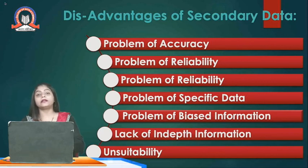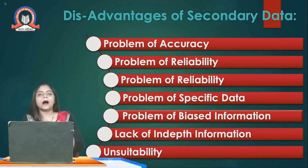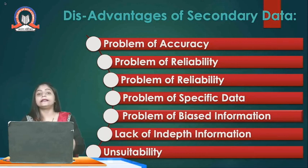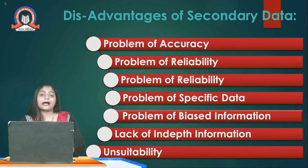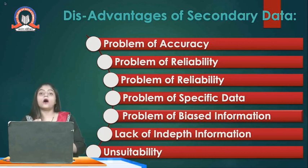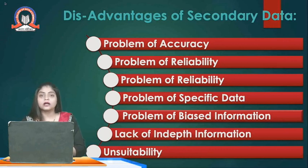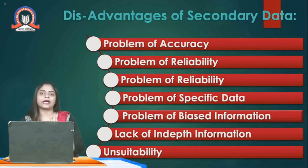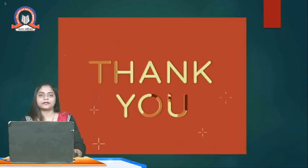The disadvantages of secondary data include that it may not be accurate or give to-the-point results. The statistics may not be up-to-date, and there is a problem of reliability — we cannot be one hundred percent sure the data is correct. There may also be biasness in the information, lack of in-depth information, or the data may not be directly suitable for our specific research work. In this video, we have understood the two types of data collection: primary and secondary.